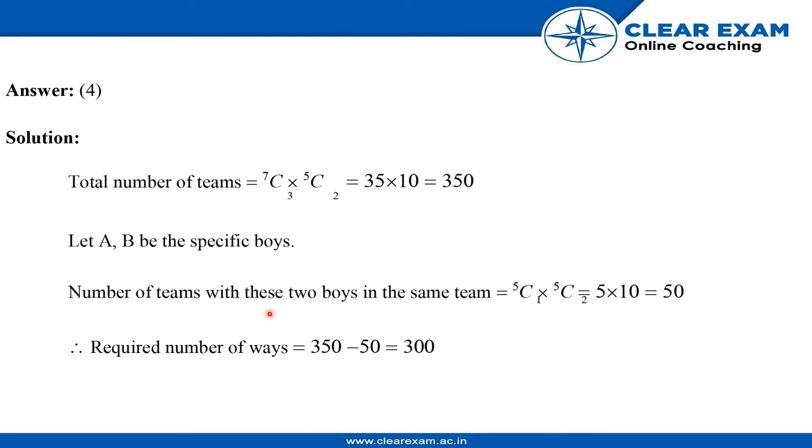Number of teams with these 2 boys in the same team are 5C1 multiply 5C2, which is equal to 5 into 10, which is 50. So required number of ways is 350 minus 50, which is 300.